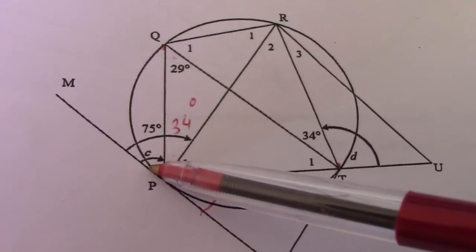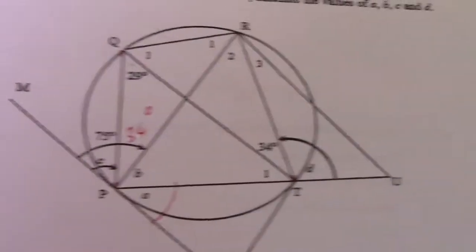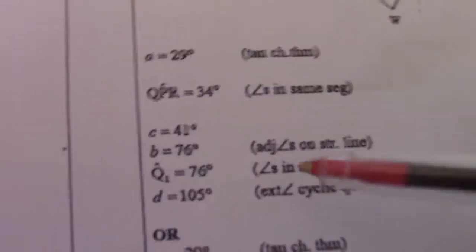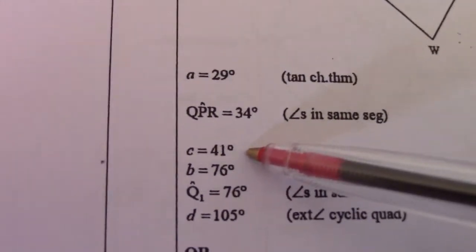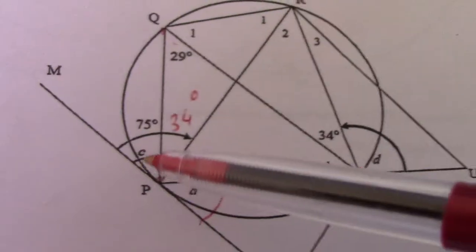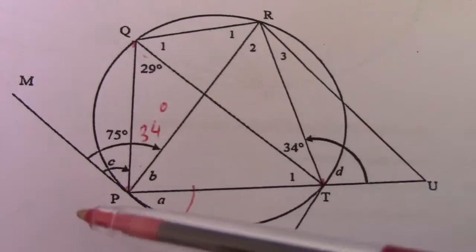So if I solve for C, C should be 75 minus 34, which then gives me 41 degrees. So angle C equals 41 degrees.